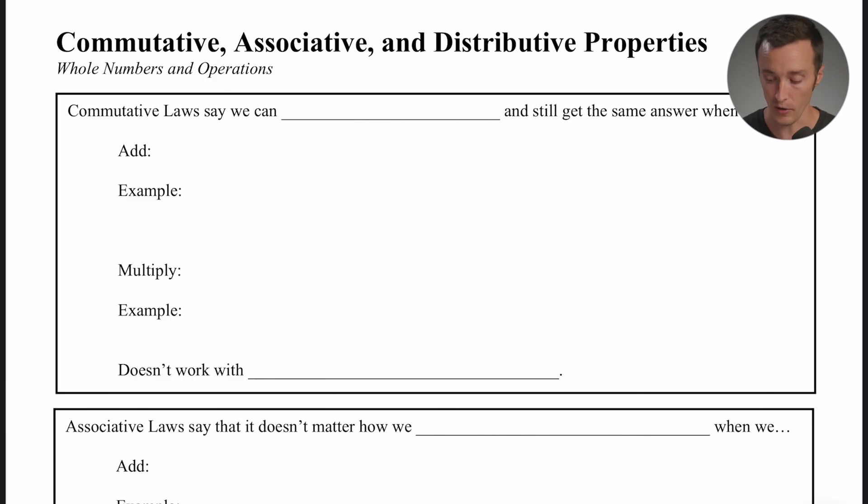So first up, let's take a look at the commutative property or the commutative law, and that says that we can swap numbers and still get the same answer when we add. I like to think of commuters to remember the commutative property - those are people that travel from place to place for work, and so that's sort of what you're going to be seeing here.